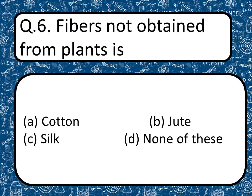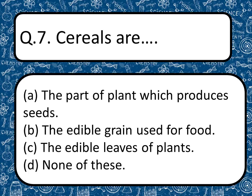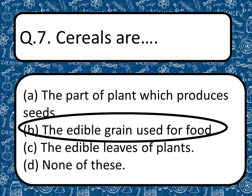Our next question: Fiber not obtained from plants — options are cotton, jute, silk, or none of these. The correct answer is silk. Cereals are defined as the edible grain used for food, not the part of plant which produces seeds or the edible leaves of plants. The correct answer is the edible grain used for food.